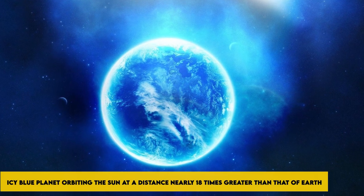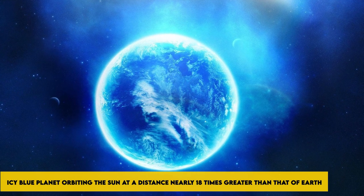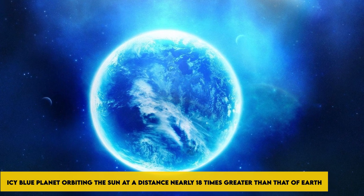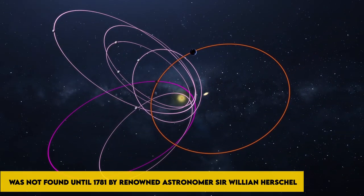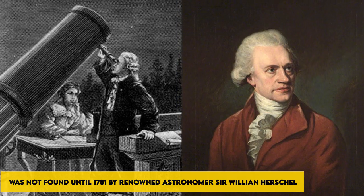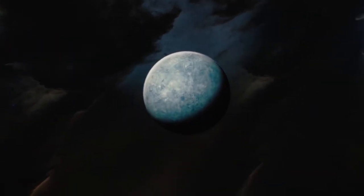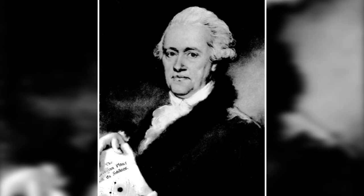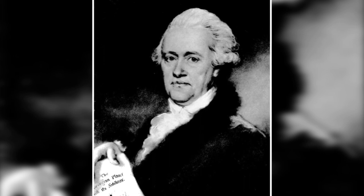The existence of an icy blue planet orbiting the sun at a distance nearly 18 times greater than that of Earth was not found until 1781 by renowned astronomer Sir William Herschel. Initially thought to be a star, then a comet, the planet was first identified as such by Sir William Herschel.